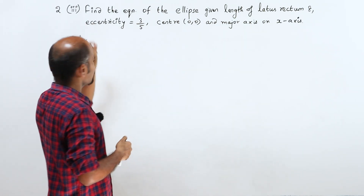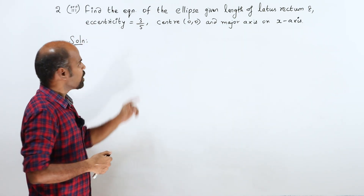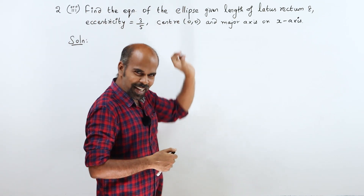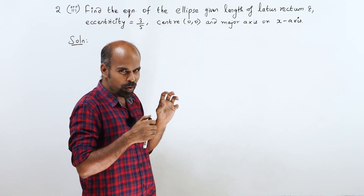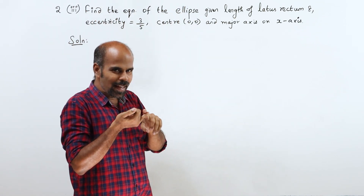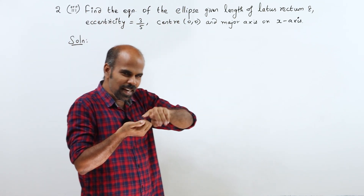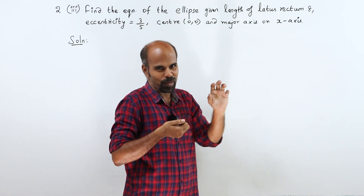Second, third subdivision. Find the equation of ellipse. H, K, A, B, L — find all of them out.